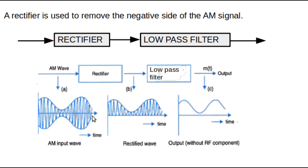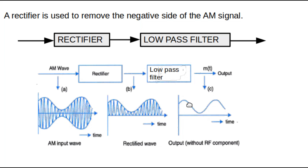We have removed the negative part of the AM signal, and along with it we have removed the message signal at the negative side. Now we have to remove the high-frequency carrier from this signal so as to get our message back. For that we are using a low pass filter, which will remove the high-frequency signal and allow only the low-frequency signal to pass. The low-frequency signal is our message signal and the high-frequency signal is our carrier, so the low pass filter removes the carrier and at its output we get the message signal.